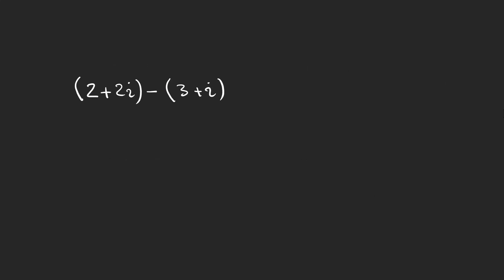The next operation is subtraction, which is a little bit like addition, but the difference is that we have a minus before the second parenthesis. We can multiply that minus one into the parenthesis, so instead of three plus i we have minus three minus i.